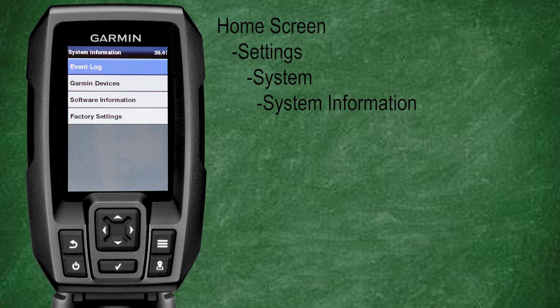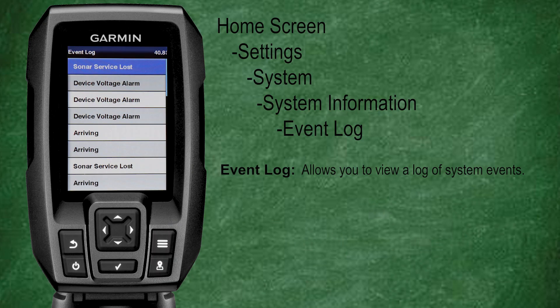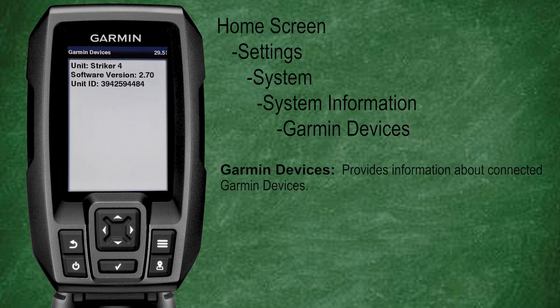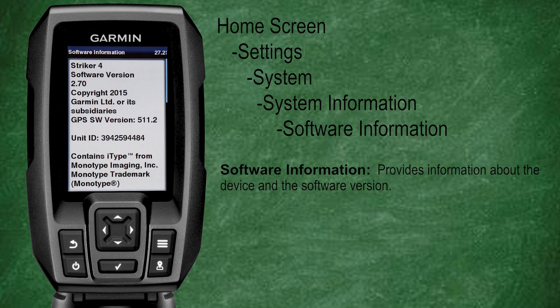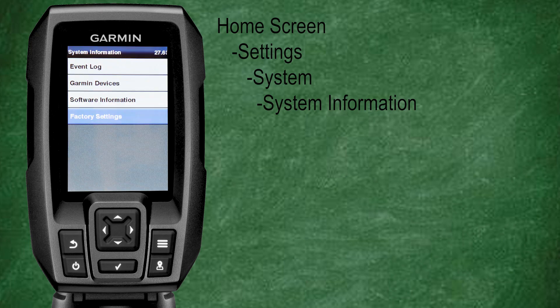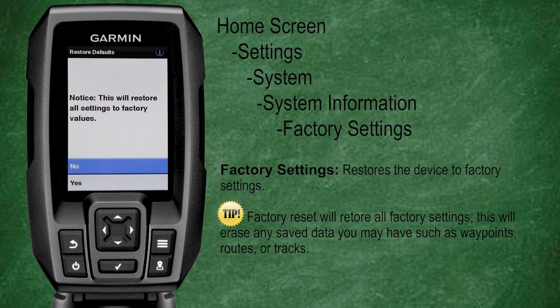Scrolling down and selecting System Information, we'll see a new set of menus for the event log, Garmin device, software information, and factory settings. The event log shows a list of system events such as alarms and notifications, which is extremely useful for troubleshooting or reviewing past events. Under Garmin Devices you'll see the device type, current software version, and unit ID. Selecting Factory Settings will allow you to return your Garmin Striker back to factory default settings, but be cautioned — this will erase all your current saved data and waypoints.